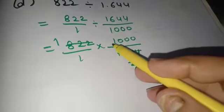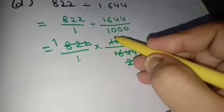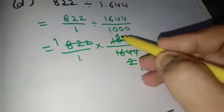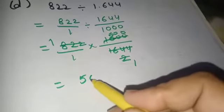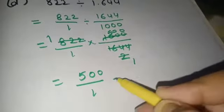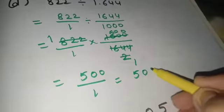2 goes into 1000, that's 500. 500 times 1 is 500, 1 times 1 is 1. The answer is 500.